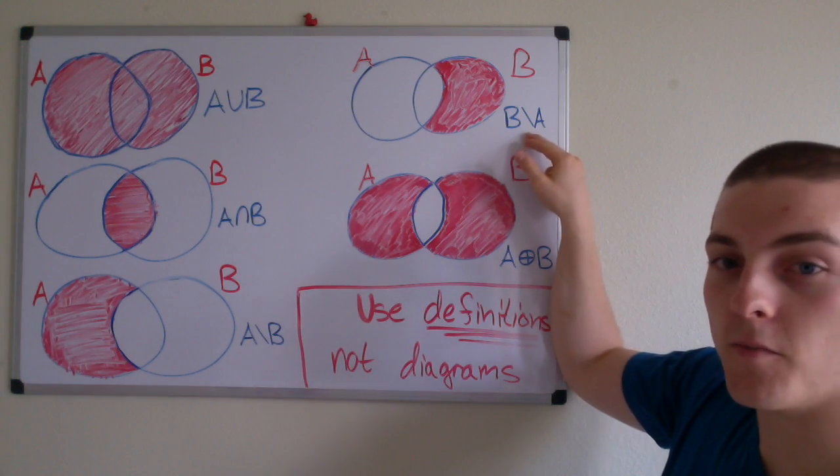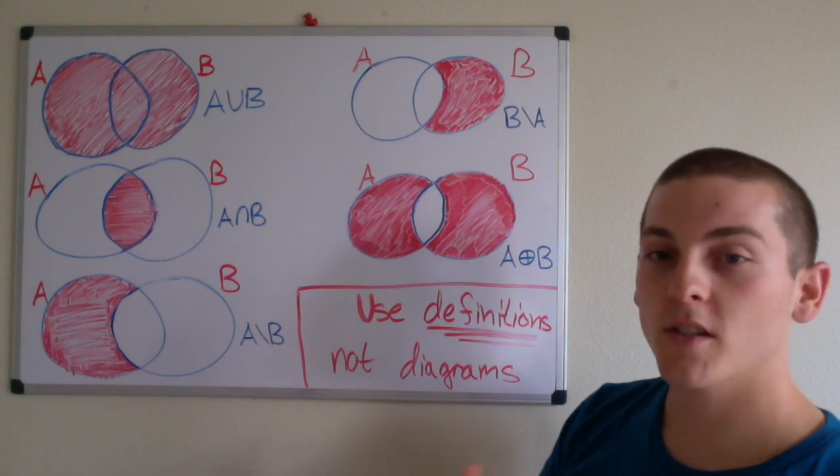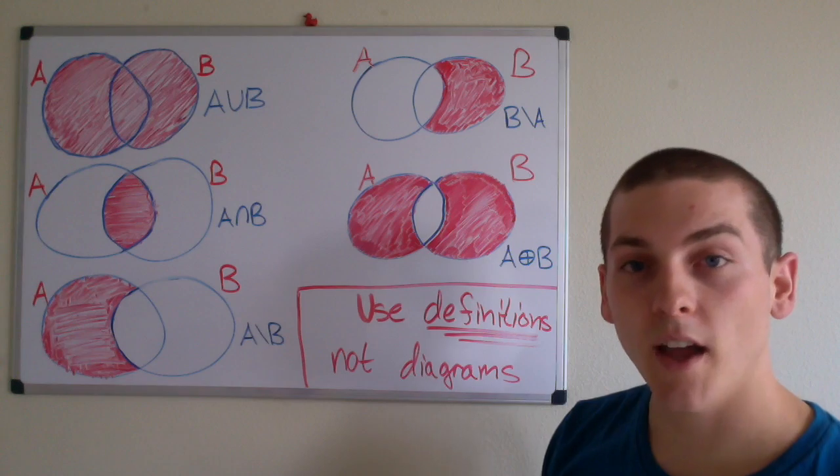The set difference of B and A is the set containing elements x such that x is an element of B and x is not an element of A.